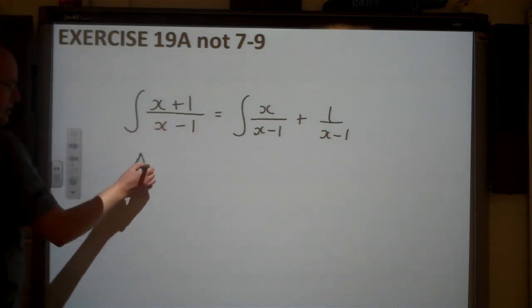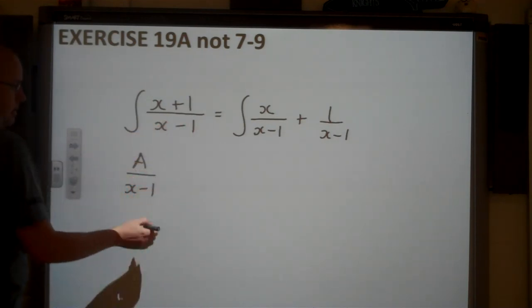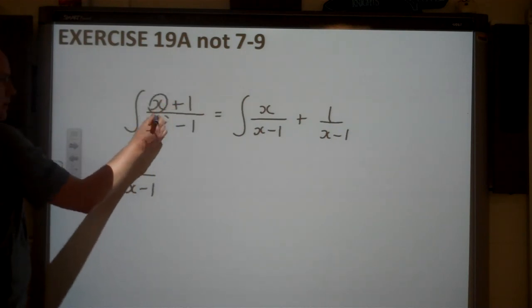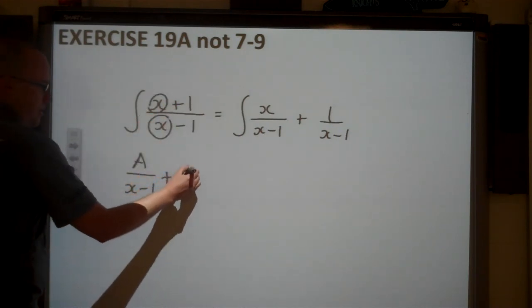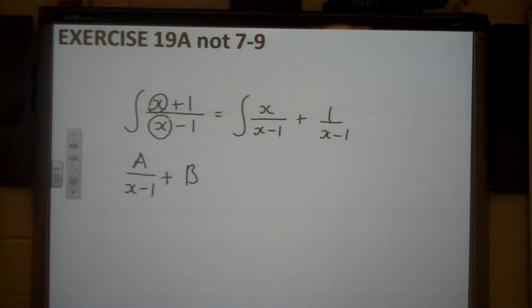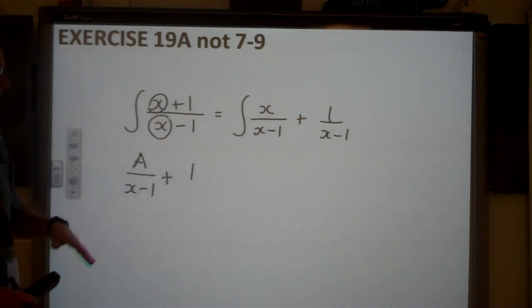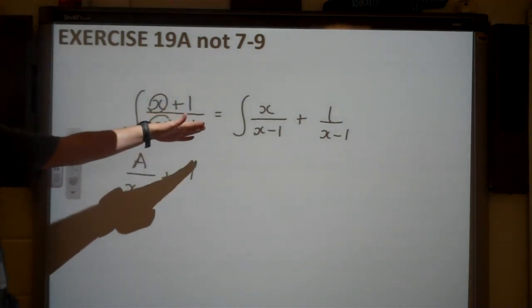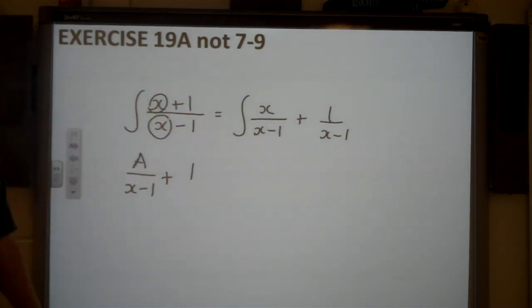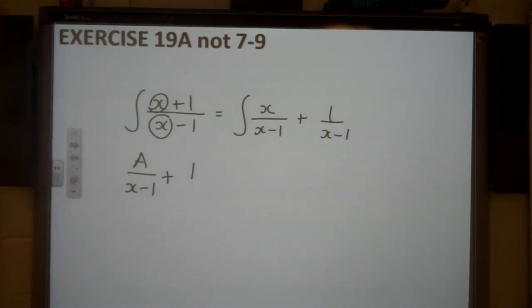So this one's actually a partial fractions question. So this is a linear factor, and as the power on the top is the same as the power on the bottom, I need a constant term at the start. And b, I can tell from this, x divided by x is just going to be 1. So not immediately obvious that that's a partial fractions question, because I think normally you'd have two factors on the bottom leading to a partial fractions question. So keep an eye out for that question when you're doing that exercise.